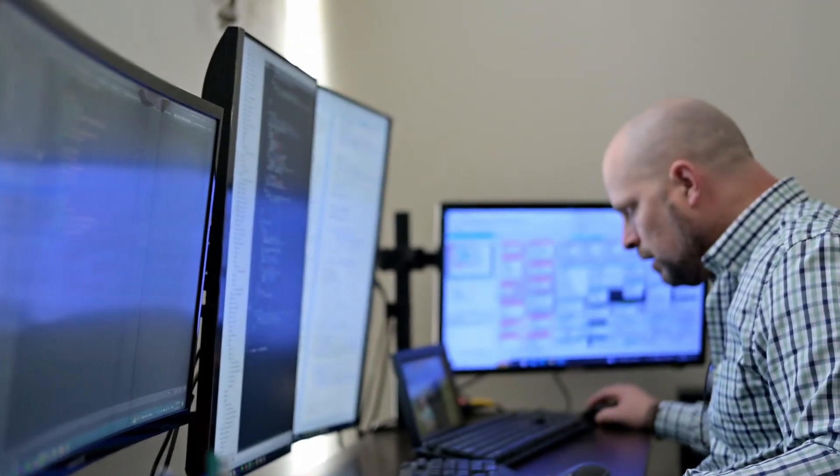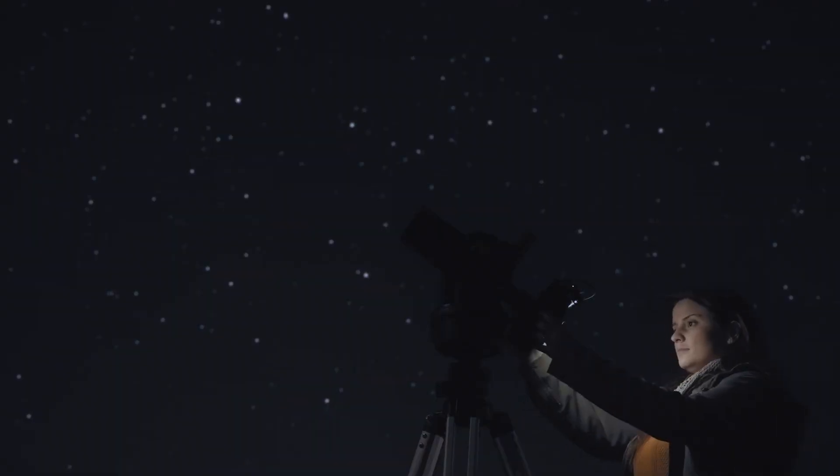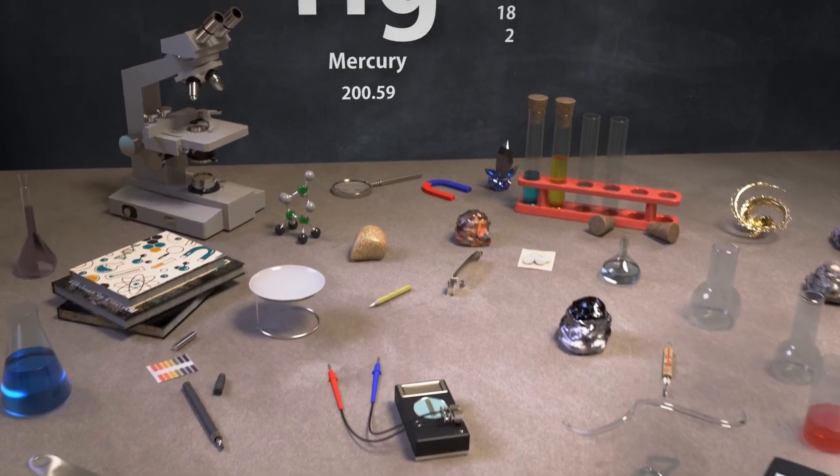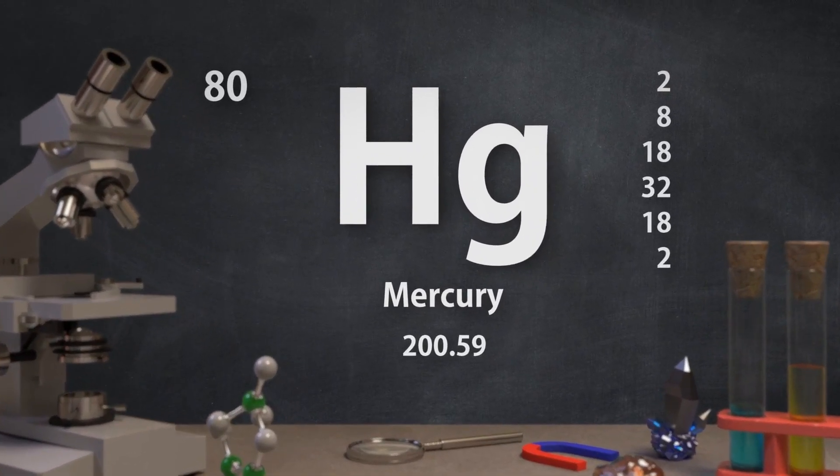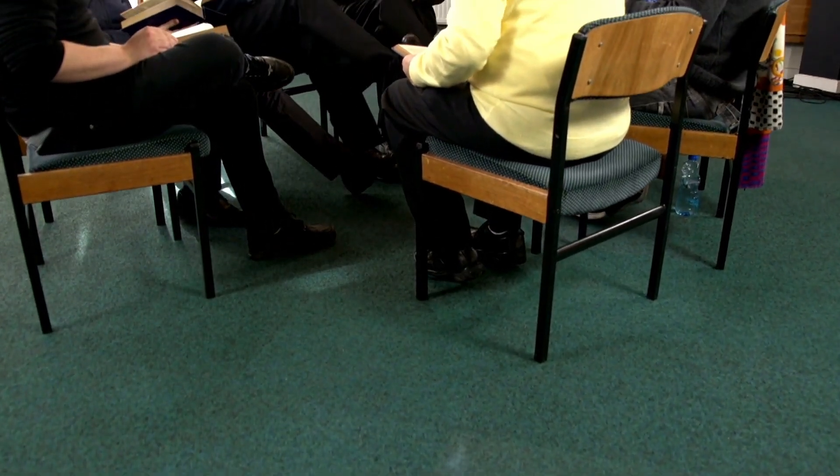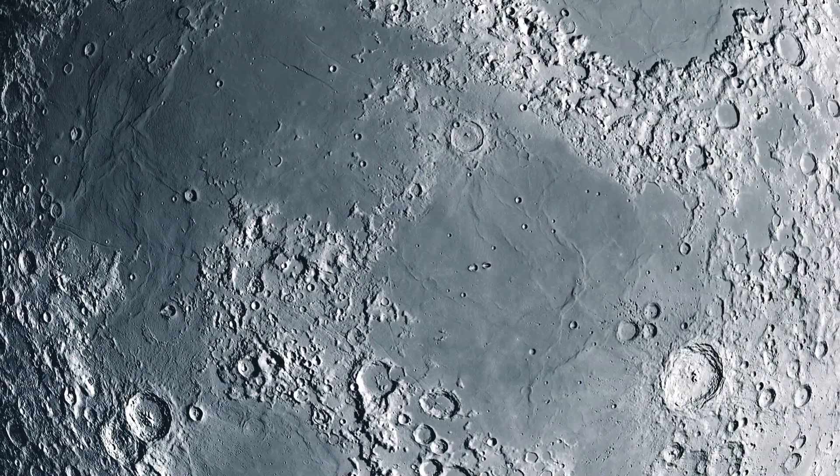Betelgeuse, with its distinctive name and prominent place in the sky, has fascinated humanity for centuries. Its importance extends beyond astronomy, leaving a lasting mark on mythology and popular culture. The star's name originates from Arabic, possibly meaning the armpit of the giant, though interpretations also suggest it could refer to a hand or shoulder. Across various cultures, Betelgeuse has been symbolically associated with different anatomical parts or animals.